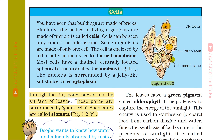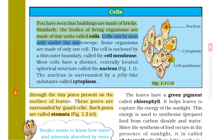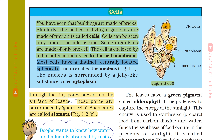You have seen that buildings are made of bricks. Similarly, the bodies of living organisms are made of tiny units called cells. Cells can be seen only under the microscope. Some organisms are made of only one cell. The cell is enclosed by a thin outer boundary called the cell membrane. Most cells have a distinct centrally located spherical structure called the nucleus. The nucleus is surrounded by a jelly-like substance called cytoplasm.